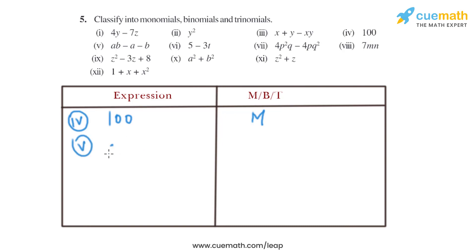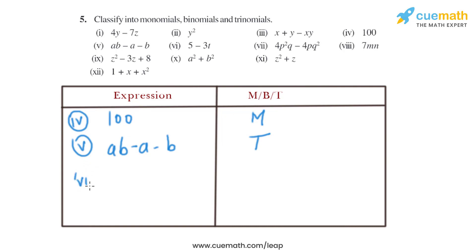The fifth expression is ab minus a minus b. As we can see, there are three different terms: ab, minus a, and minus b, so that is basically a trinomial. In the sixth part, the expression given is 5 minus 3t. As we can see, there are two terms, so it is basically a binomial.